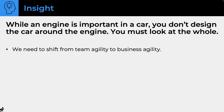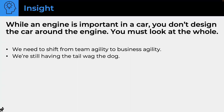We need to shift from team agility to business agility. Team agility may be a requirement for business agility, but if you don't have business agility you're definitely not going to get things done quickly as an organization. Surprisingly, paying attention to business agility can actually help you get team agility. If you can get teams to understand how they work together, it'll be easier to teach them why they need to do iterative development. A holistic view is needed.